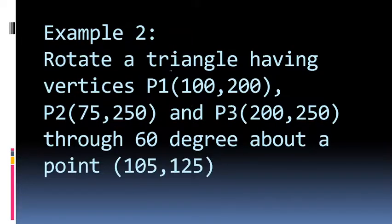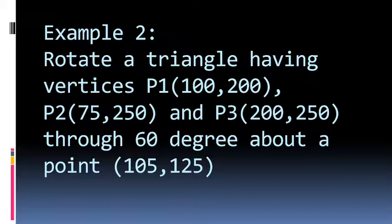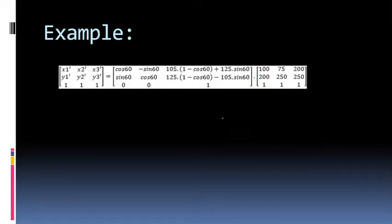Let's take another example to illustrate further. This time, instead of rotating a single point, we rotate a complete triangle with three vertices P1, P2, and P3. The rotation is 60 degrees about the same pivot point as before. The composite rotation matrix is the same as we just studied, but instead of a single column matrix for one point, we write a three-column matrix for three points — adding an additional column for each point.